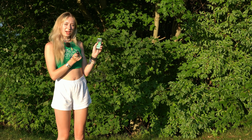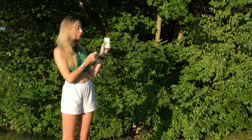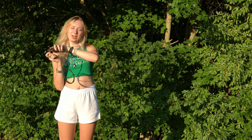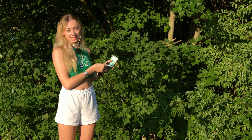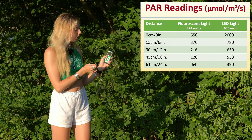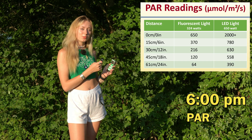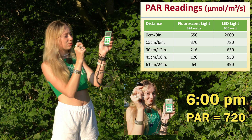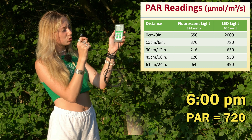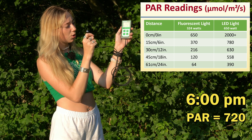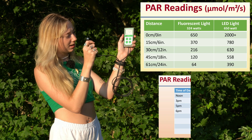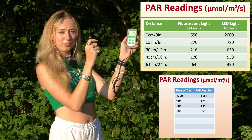Right now we're outside using our PAR meter to compare the PAR of the sun with the PAR of our artificial lighting inside. It's about 6 p.m. during the first week of August, and the PAR meter is reading about 720 — just over 700. With this information we can compare with our indoor readings.